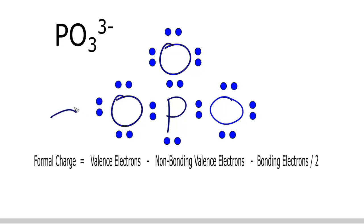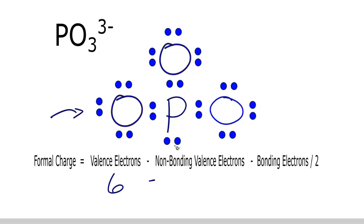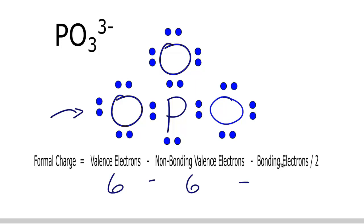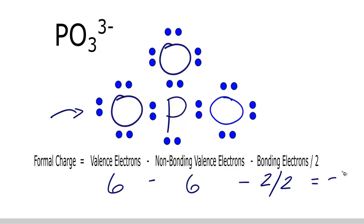We'll start with this oxygen right here. Oxygen has six valence electrons — it's in group 6A or group 16 — so we put 6 here. We subtract non-bonding valence electrons, the electrons not involved in a chemical bond: that's 2, 4, 6 of those. Then we subtract the bonding electrons divided by 2. The bonding electrons are shared between atoms and form the bond. For the phosphorus-oxygen bond right here, we have 2, divided by 2. So 6 minus 6 is 0, minus 2 over 2 gives us a formal charge of minus 1. We put that in parentheses — that's the formal charge on that oxygen.